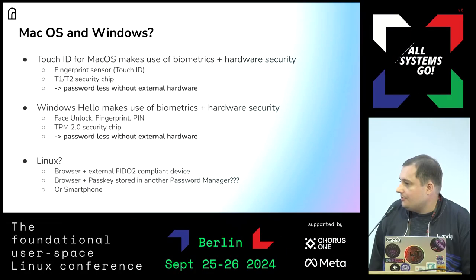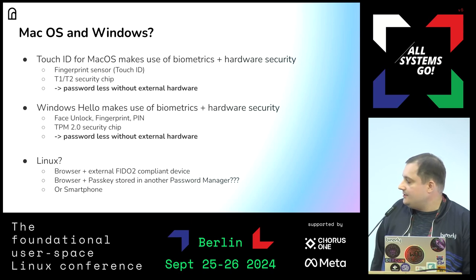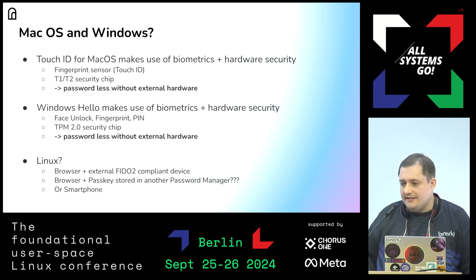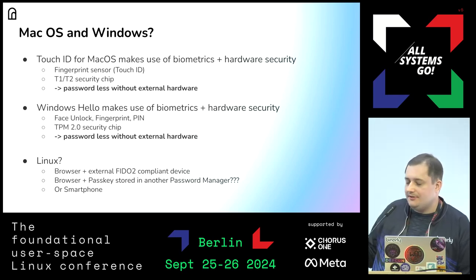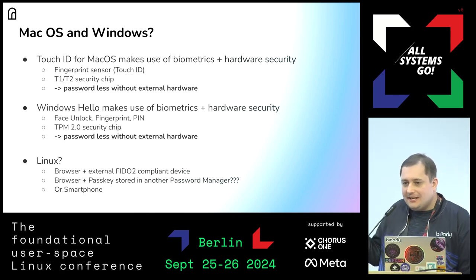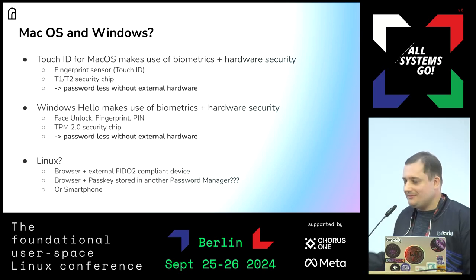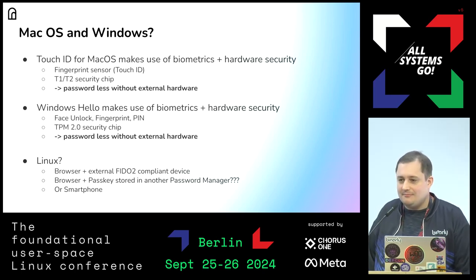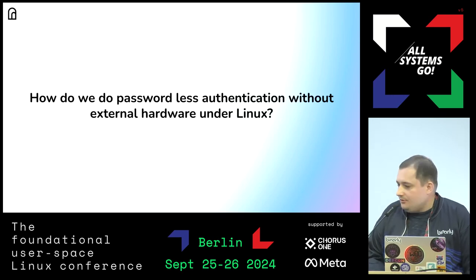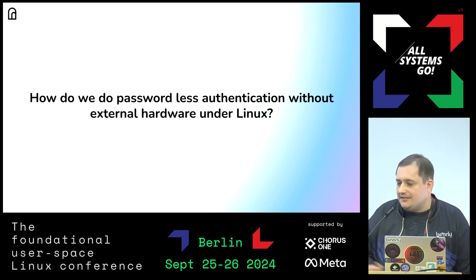How it works on macOS: Touch ID is a fingerprint sensor plus the T1 or T2 security chip on modern MacBooks, enabling passwordless without external hardware. Similarly for Windows Hello — face unlock and other biometrics, even a PIN in combination with the TPM security chip. But on Linux currently, there's only the browser plus an external FIDO-compliant device like a YubiKey, or storing a passkey in a password manager, or using your smartphone — which I hate, having to take out my smartphone every time.